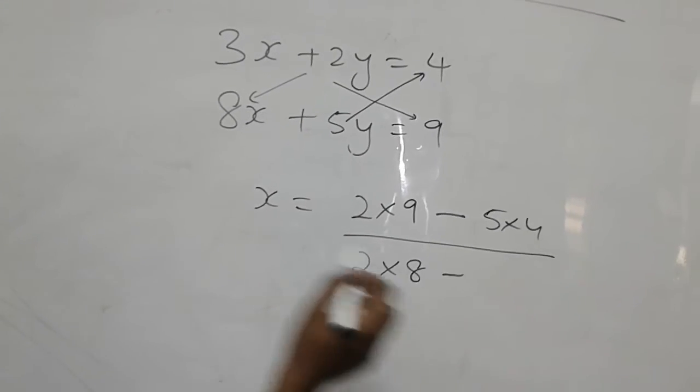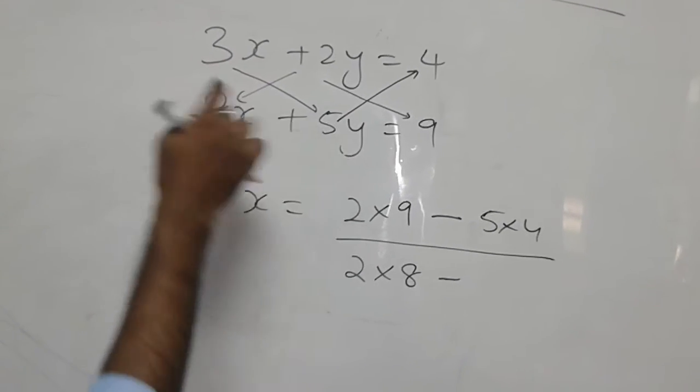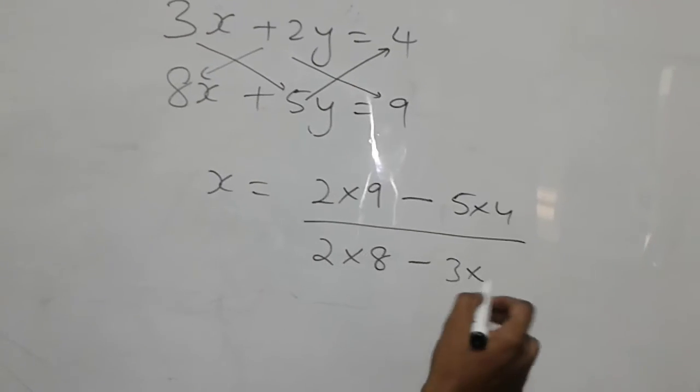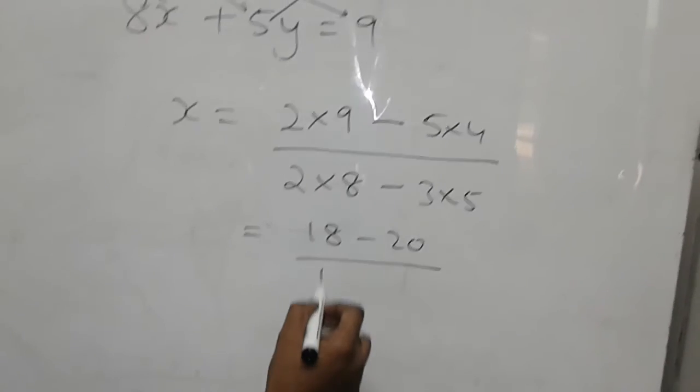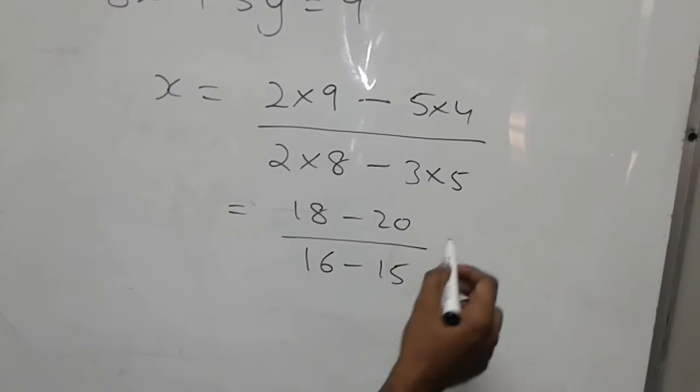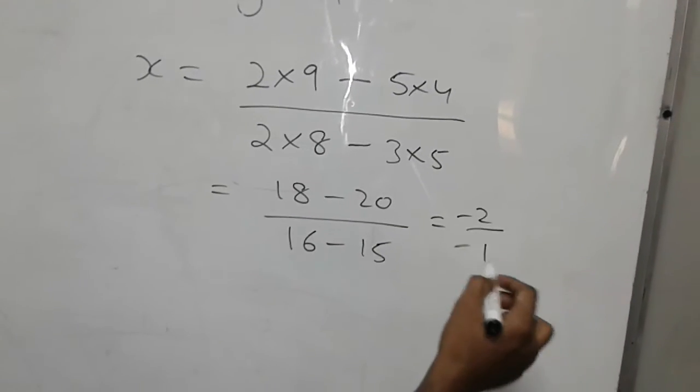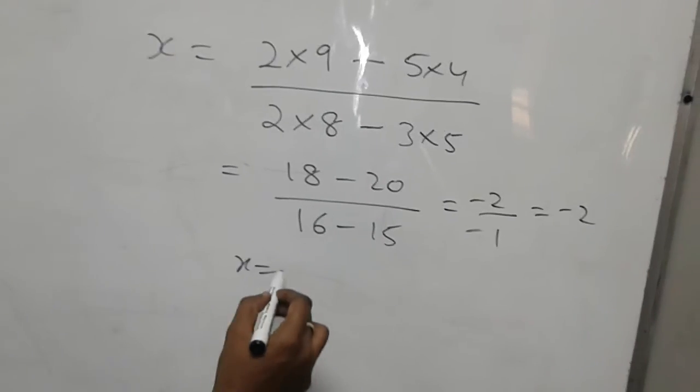That is 2 and 8 from top, and then from top to bottom, 3 into 5. This will give me answer 18 minus 20 upon 16 minus 15, so the answer is minus 2 by 1, which is minus 2. That is my x.